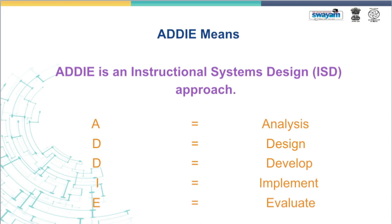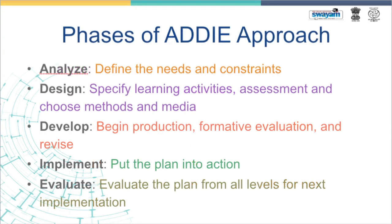The ADDIE model stands for Analysis, Design, Development, Implementation, and Evaluation. In the Analysis phase, you define the needs and constraints of the learners. In the Design phase, you specify learning activities, assessments, and choose methods and media. In the Development phase, you begin production, conduct formative evaluation, and revise. In Implementation, you put the plan into action, and finally, in Evaluation, you evaluate the plan from all levels for future implementations.